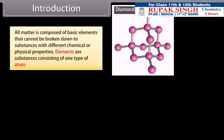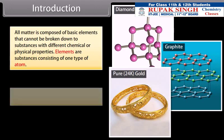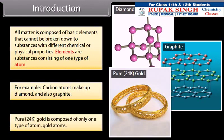All matter is composed of basic elements that cannot be broken down to substances with different chemical or physical properties. Elements are substances consisting of one type of atom. For example, carbon atoms make up diamond and also graphite. Pure 24 karat gold is composed of only one type of atom, gold atoms.